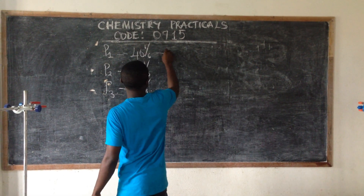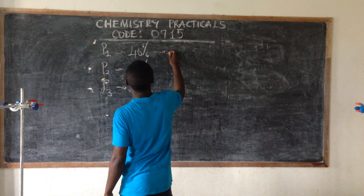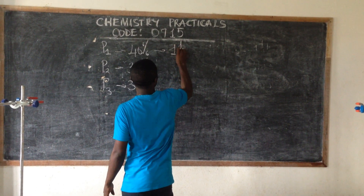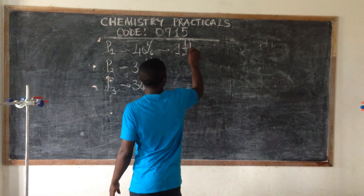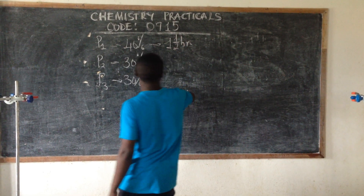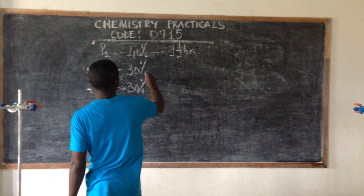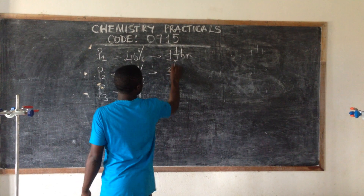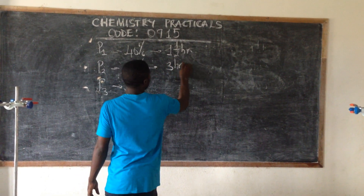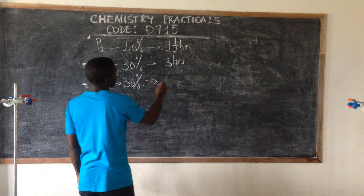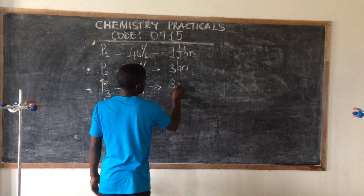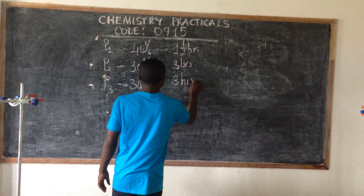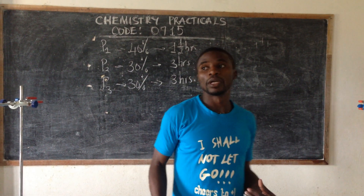Paper 1 has a duration of one and a half hours — that's one hour, 30 minutes. Paper 2 has a duration of three hours and Paper 3 has a duration of three hours as well.